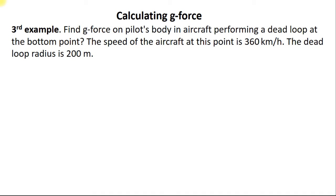The third example: Find g-force on a pilot's body in an aircraft performing a dead loop at the bottom point. The speed of the aircraft at this point is 360 km per hour. The dead loop radius is 200 meters.